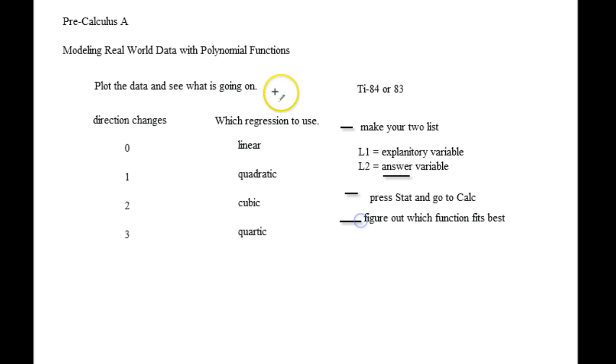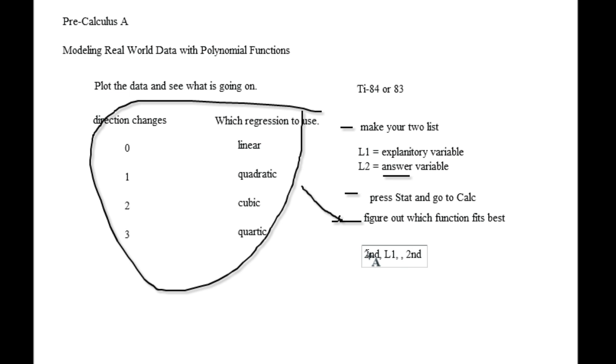In other words, you are going to look at this list over here, to figure out which regression to use. And then you press the second button, then L1, then comma, second button, like literally you are typing in comma. Then you press the second button again, then you press L2, and then you press enter.